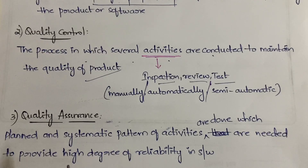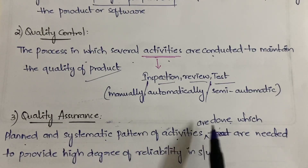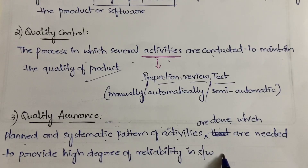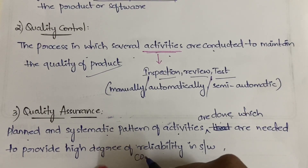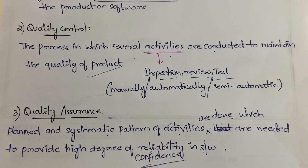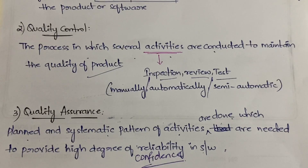The third quality concept is quality assurance. In quality assurance, a planned and systematic pattern of activities is performed because they are needed to provide a high degree of reliability in the software. High degree of reliability means confidence — confidence that we can depend on the software, that it is secure and complete.